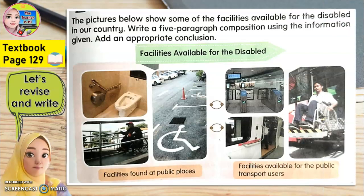This is from your textbook page 129. This is the continuation from our previous lesson. Previously, we learned how to write a good paragraph. Sebelum ni kita belajar macam mana nak tulis perenggan. So today we will continue on how to write a composition. Hari ni kita teruskan macam mana nak tulis karangan.